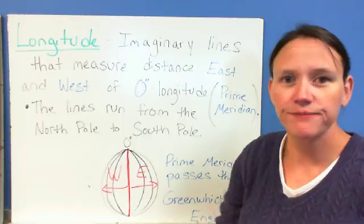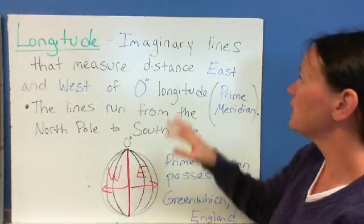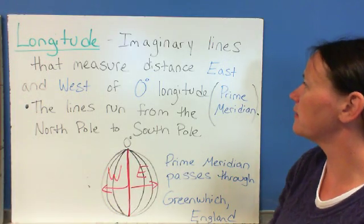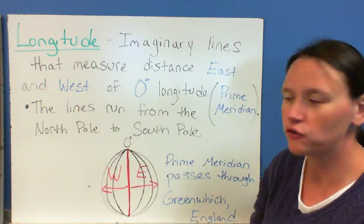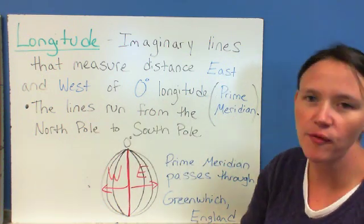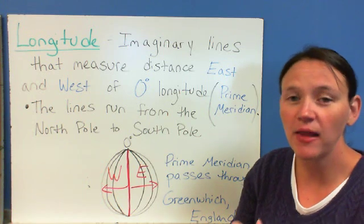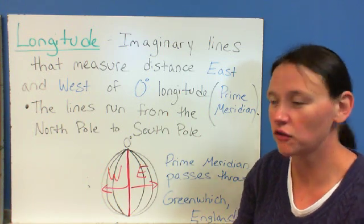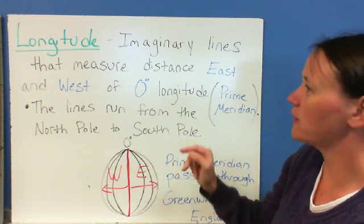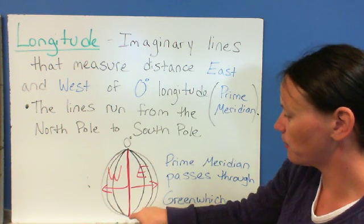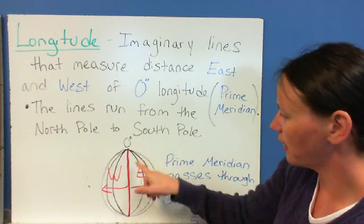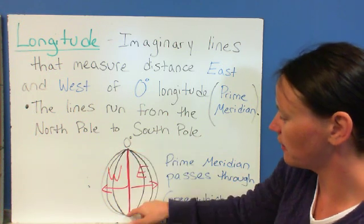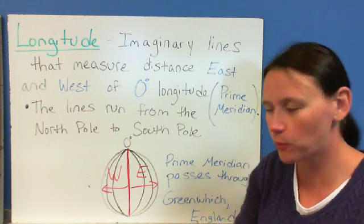Now, longitude, obviously, is going to run the other way. These are imaginary lines that measure the distance east and west of zero degrees longitude, or what we call the prime meridian. Now, the latitude lines never touch each other. The prime meridian and all the lines of longitude meet at the poles. You can see how it kind of looks like a basketball. They meet right at the top and the bottom. They do touch at those points.